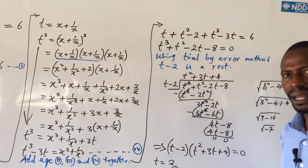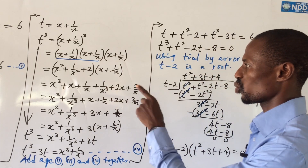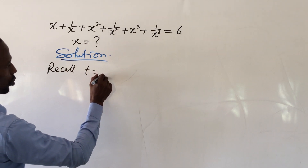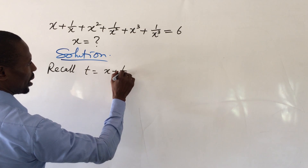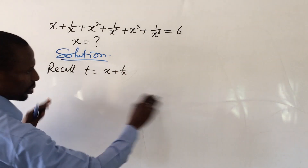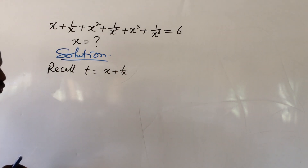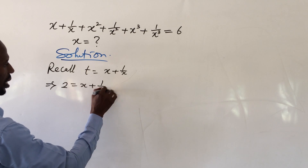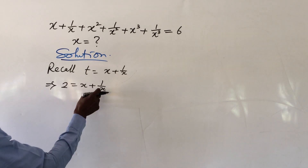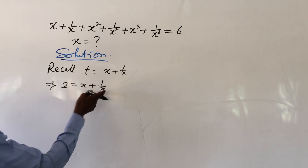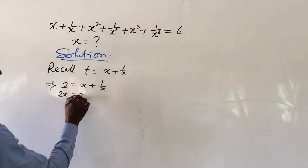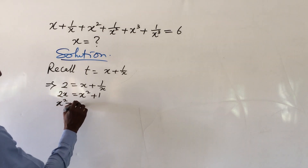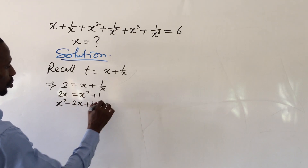Recall we said t = x + 1/x. We've calculated t = 2, so this gives us 2 = x + 1/x. Multiplying both sides by x to eliminate the fraction: 2x = x² + 1. Rearranging: x² - 2x + 1 = 0.